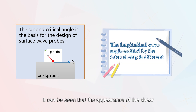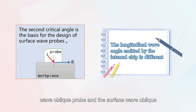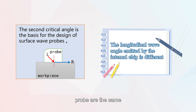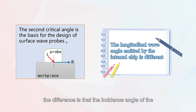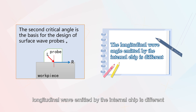It can be seen that the appearance of the shear wave oblique probe and the surface wave oblique probe are the same. The difference is that the incidence angle of the longitudinal wave emitted by the internal chip is different.